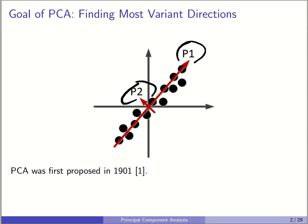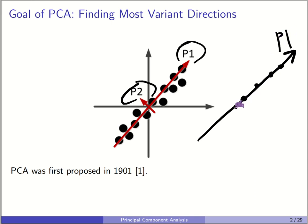However, if we use only the most important directions of PCA, like only P1, then all of these points are projected onto P1, and we will have some reconstruction error. This can be used for dimensionality reduction, so PCA can be used for dimensionality reduction or feature extraction. PCA was first proposed in 1901, and then it was improved in later papers.